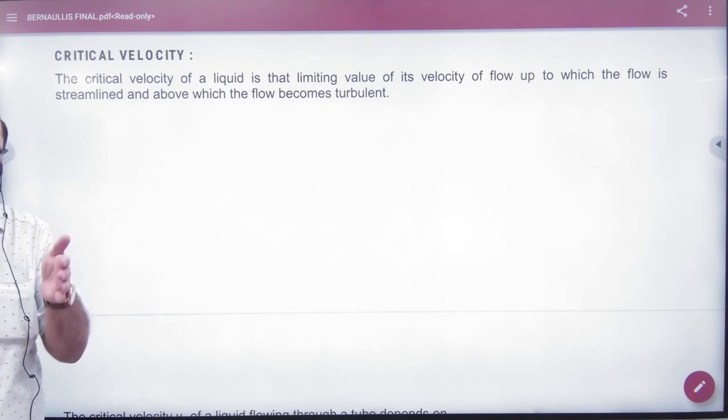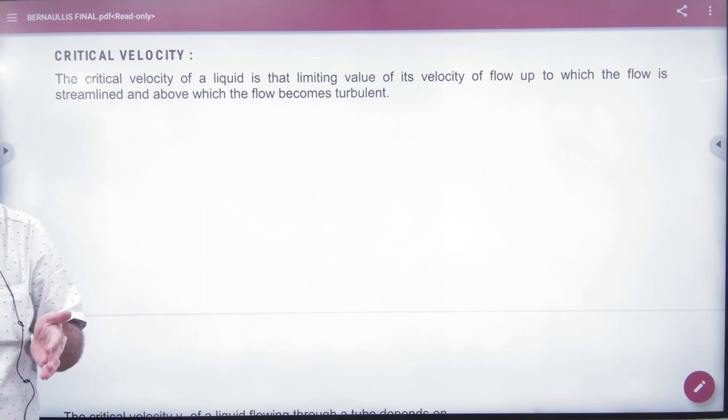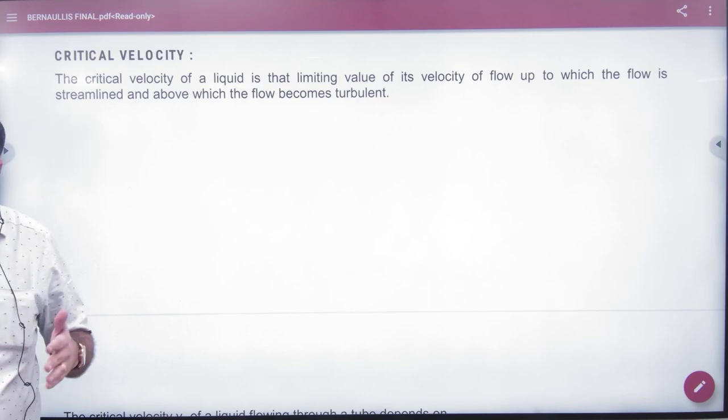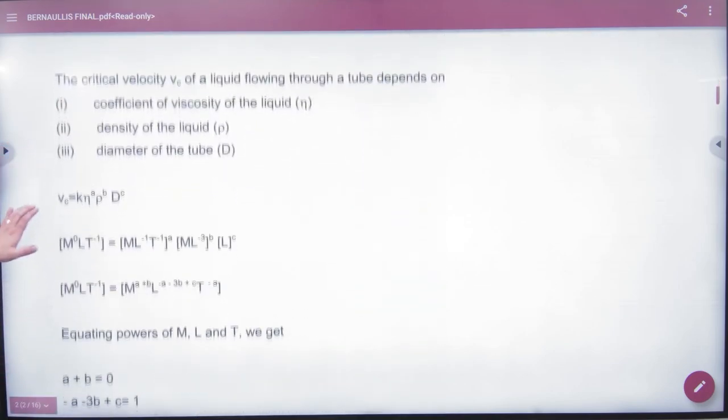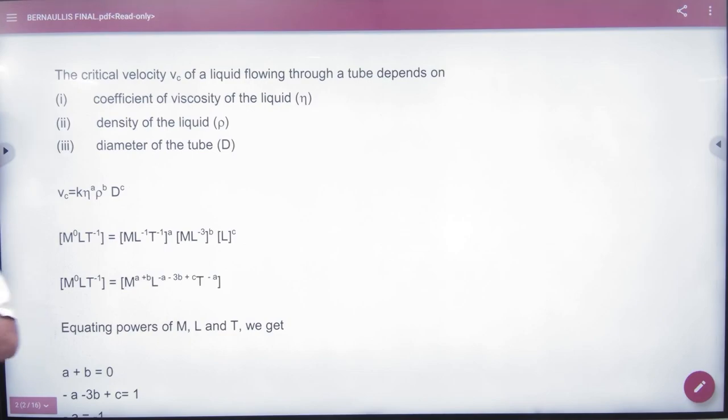That cutoff velocity is critical velocity. So if your velocity is below critical, then flow is streamlined. Above critical, flow is turbulent. So this is the importance of critical velocity. For the expression to prove, what do you do?